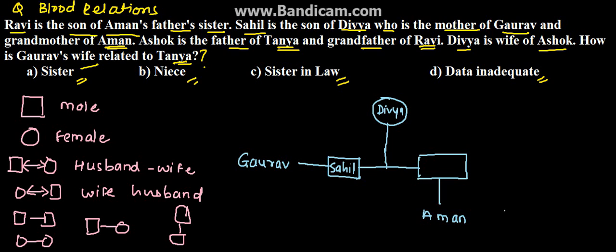Ashok is the father of Tanya and grandfather of Ravi. So Ravi is the grandson and Ashok is the grandfather. Tanya is the daughter, so Tanya will be in the same generation line as the children.